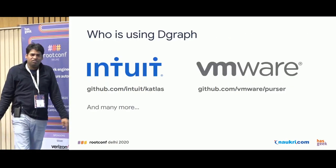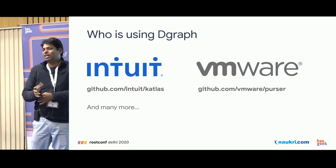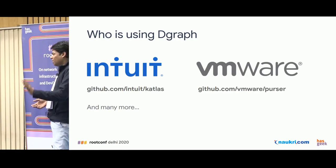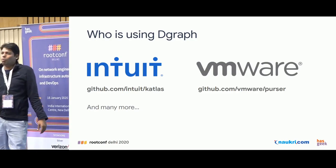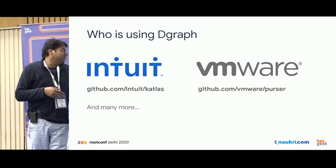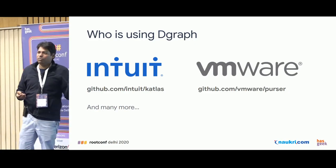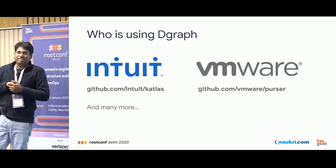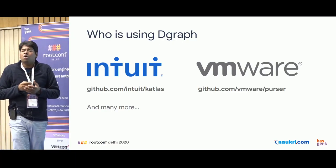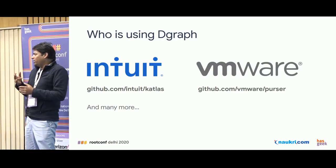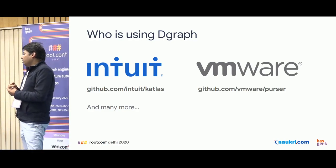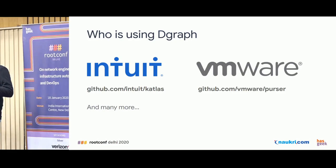Who is using DGraph? There are many enterprise clients but their names cannot be revealed due to agreements. Two notable open-source projects are Catalyst by Intuit, which uses DGraph as their graph layer, and Purser by VMware, which uses DGraph completely as their database.